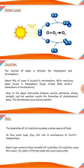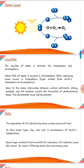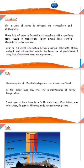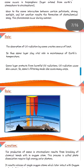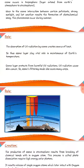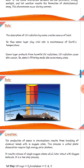Interaction between certain pollutants, strong sunlight, and hot weather results in the formation of photochemical smog. This phenomenon occurs during summer. The absorption of UV radiation by ozone creates a source of heat, and thus the ozone layer plays a vital role in maintaining Earth's temperature and protecting life from harmful ultraviolet radiation.